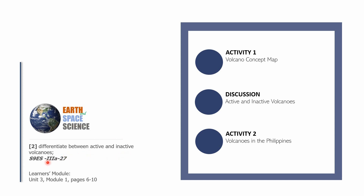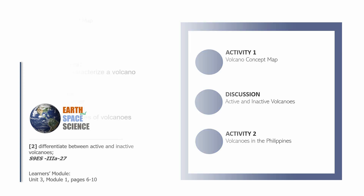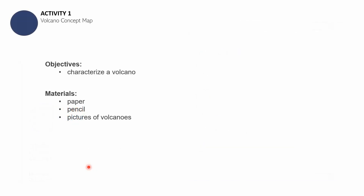If you want to follow through with a reading material, you can always open your learner's module to Unit 3, Module 1, pages 6 to 10. Let's begin. Get your science notebook or an extra sheet of clean paper and label it Activity Number One — Volcano Concept Map.